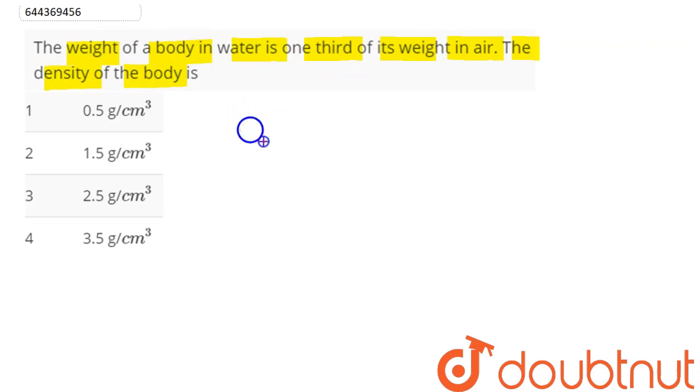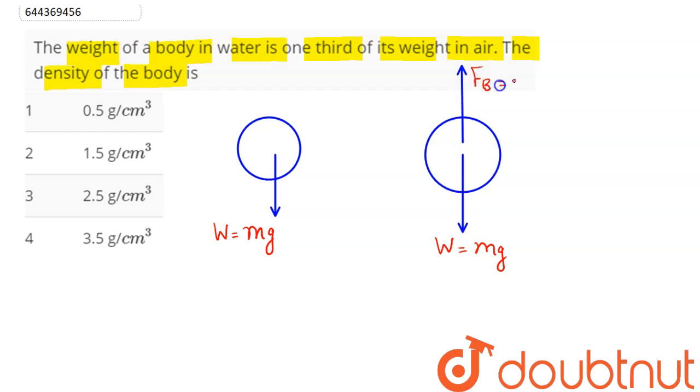Here in air, the weight of the body is its true weight, that is we can say as mg. But in water, we can say here the apparent weight will be given as mg minus buoyancy, which is given to be one third of its true weight in air. That is, we can say here in air this weight is mg, whereas in water this weight here, mg shall be acting downwards.